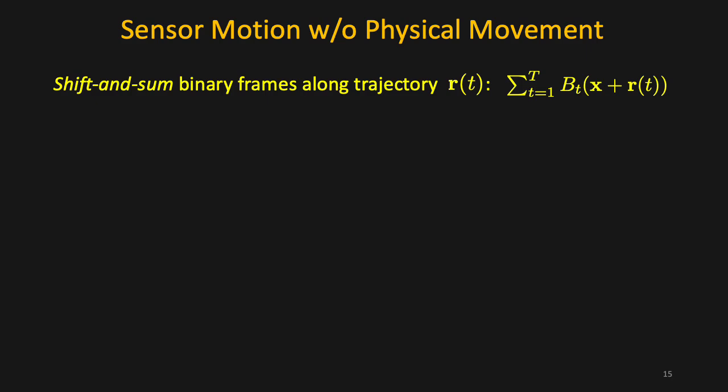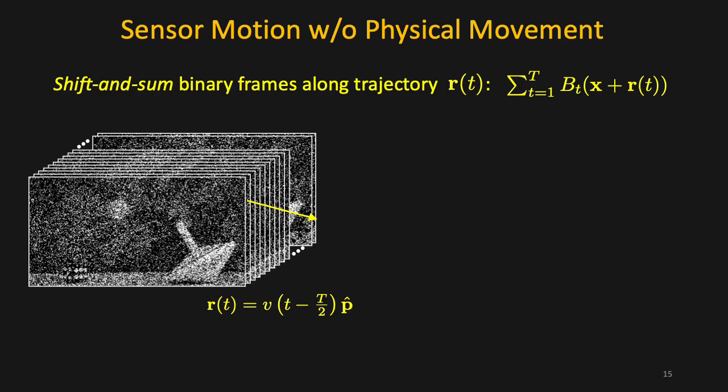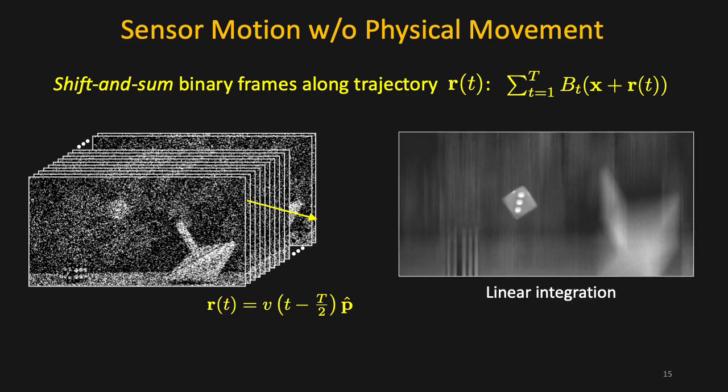If we integrate along a linear trajectory, the suitable choice of trajectory slope can produce a sharp image of objects in motion, for example, the falling die in the scene.